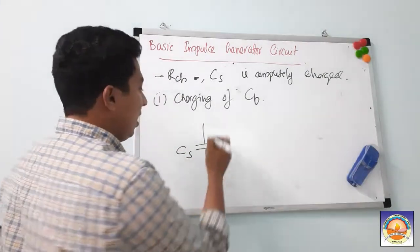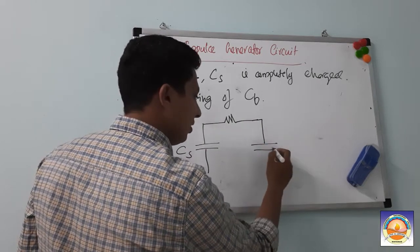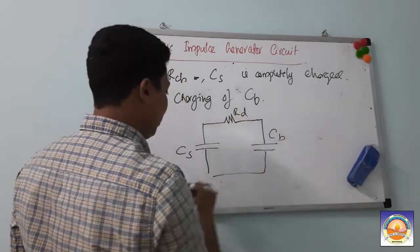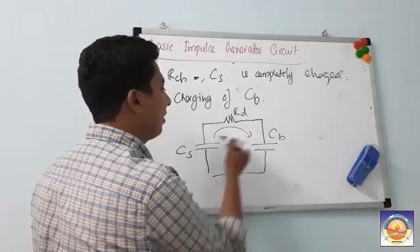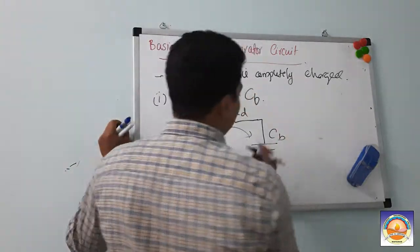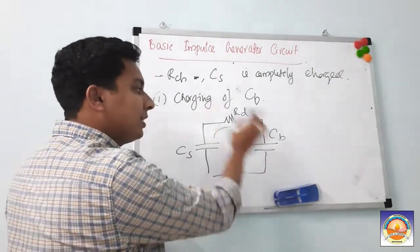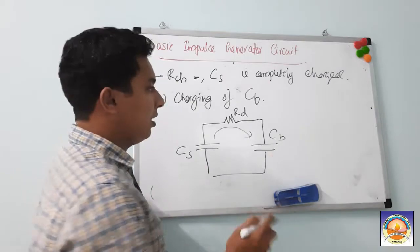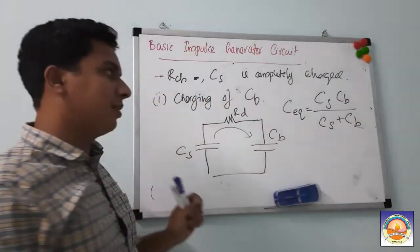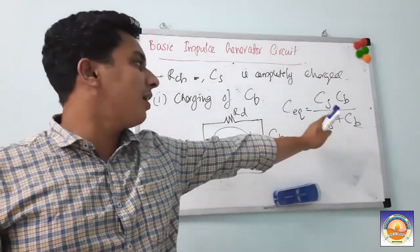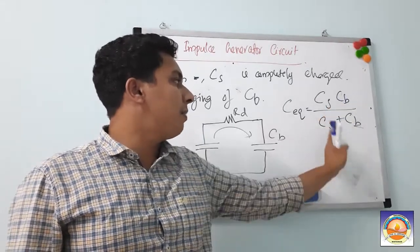When CS is already completely charged and charging of CB begins, your CS and CB are in series in the circuit. The equivalent capacitance is C_eq = (CS × CB) / (CS + CB). The time constant tau1 for this RC circuit will be equal to Rd × C_eq = Rd × (CS × CB) / (CS + CB).